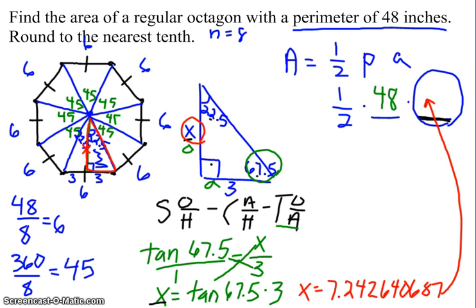So what I'm going to do is kind of work backwards. With this 7.242640687 in my calculator, I'm going to do times 48 and press equal. Then I have one-half times, the big number I have now is 347.646753.